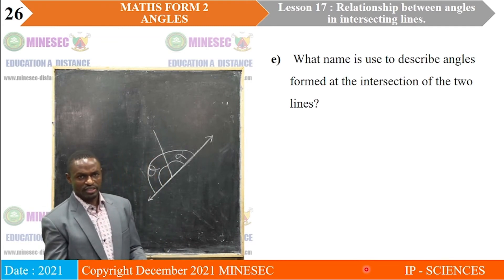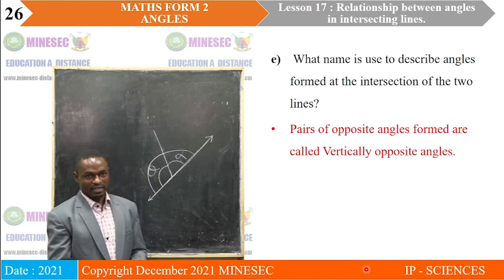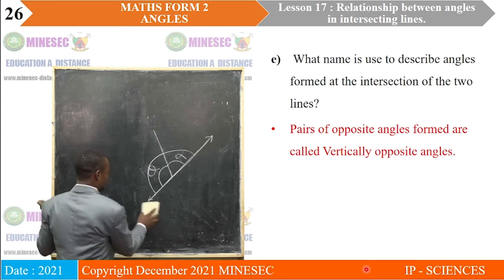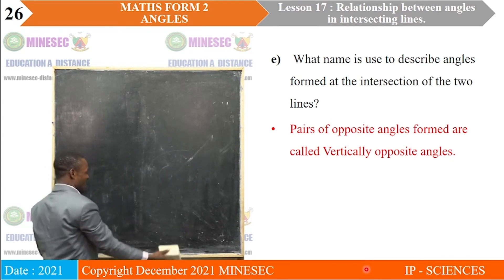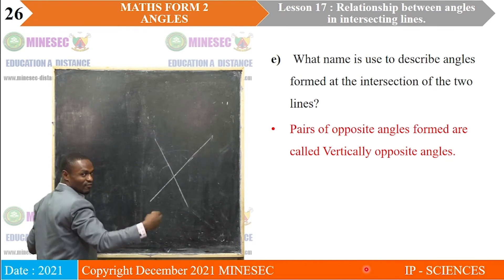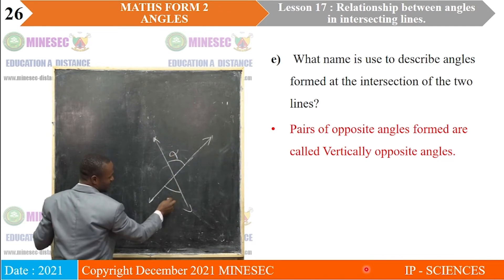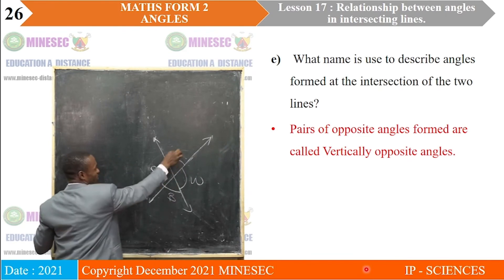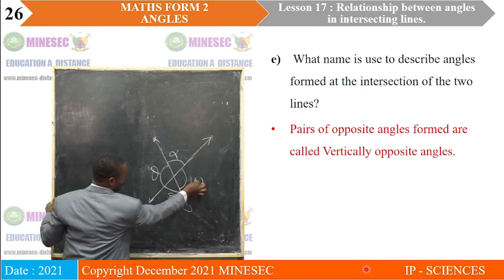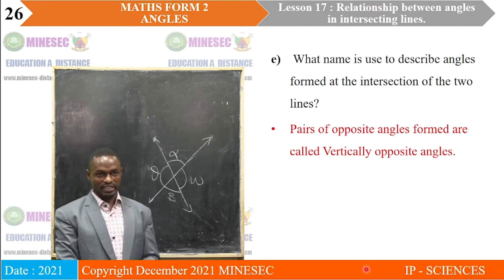E: What name is used to describe angles formed at the intersection of two lines? Pairs of opposite angles formed are called vertically opposite angles. Formally in mathematics, when two lines intersect like this and form angles, those opposite angles — beta and omega — are not just opposite angles; they are called vertically opposite angles.